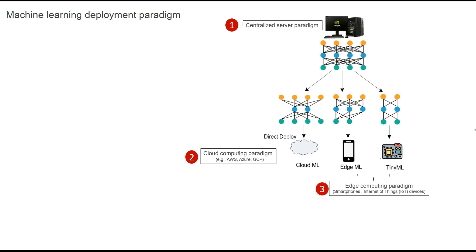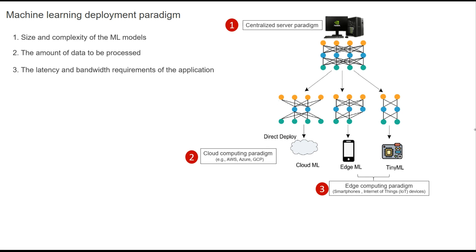The cloud computing paradigm is good for applications that require scalability and can benefit from cloud services like storage, data processing, and analytics. The third paradigm is the edge computing paradigm — the main concept of this video series — where ML models are deployed on edge devices like smartphones, IoT devices, drones, or sensors. Models are optimized for limited resources and can run locally without a network connection, making it ideal for real-time response, privacy, and limited connectivity scenarios. The choice of paradigm depends on factors including model size and complexity, the amount of data to be processed, and the latency and bandwidth requirements.